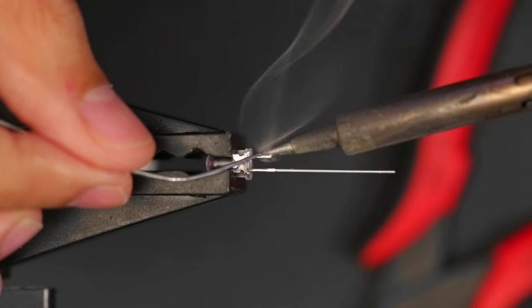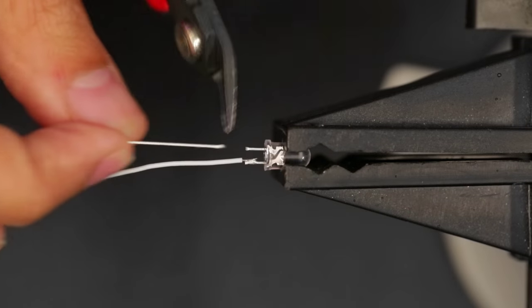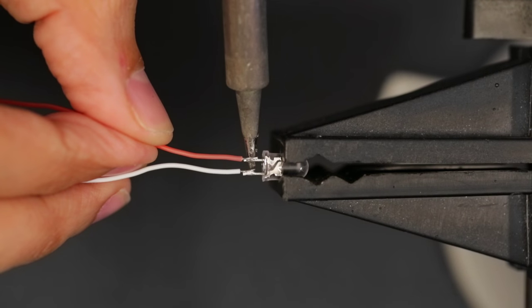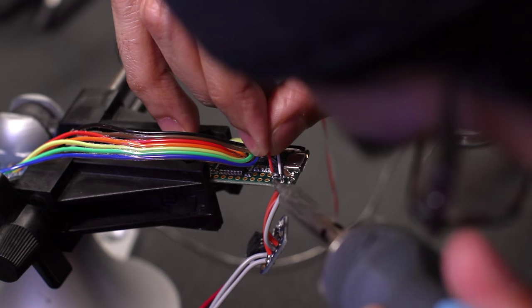We'll use a UV LED to illuminate the unicorn horn. Trim the leads short, connect one wire to each lead, and then solder the wires to the Teensy board.